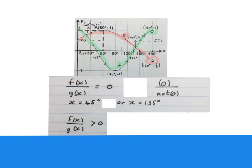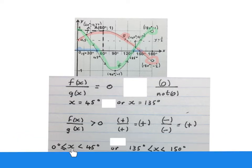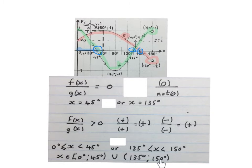The next question asks where is f of x divided by g of x bigger than zero — where does this give a positive answer. In division, a positive divided by a positive gives positive, and a negative divided by a negative gives positive. The answer is x is bigger than or equal to 0 degrees and x is smaller than 45 degrees, or x is bigger than 135 degrees and x is smaller than 150 degrees. You may also write it in interval notation.